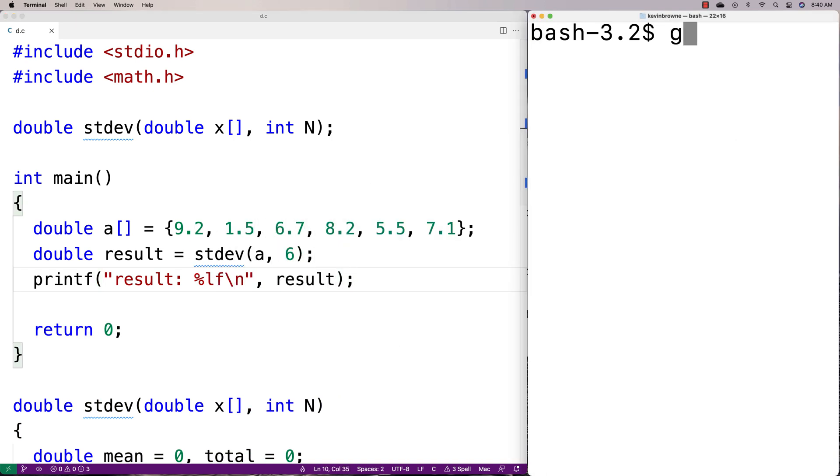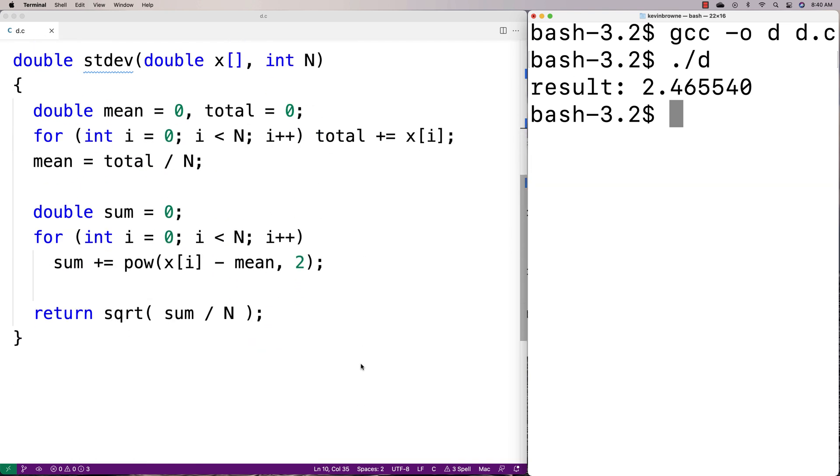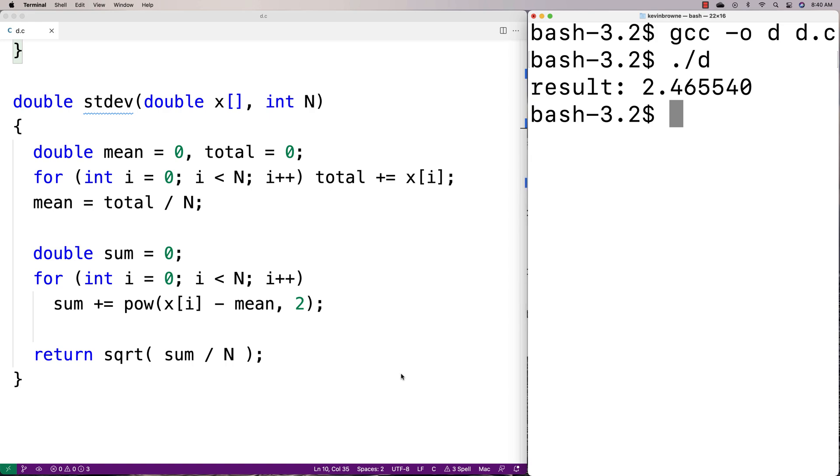I'll save this, do a compilation, and run it. We get a result of 2.465540, which is correct. We've created a function in C to compute the standard deviation of elements in an array.